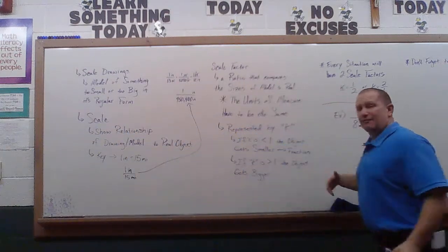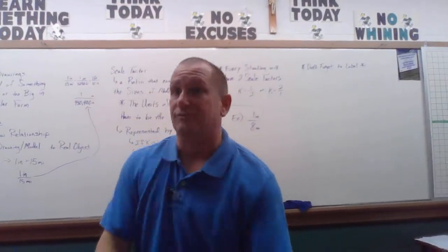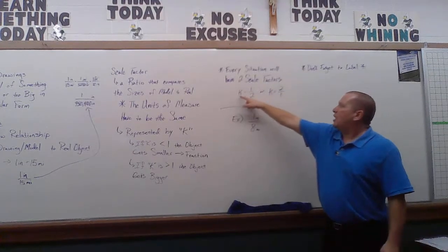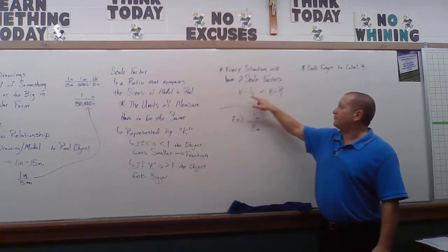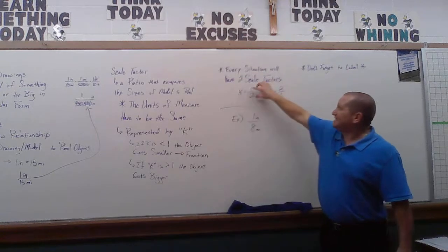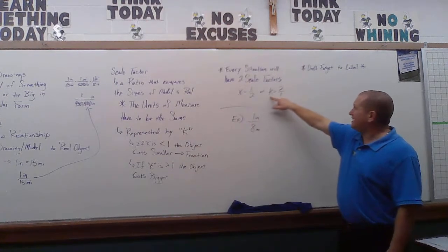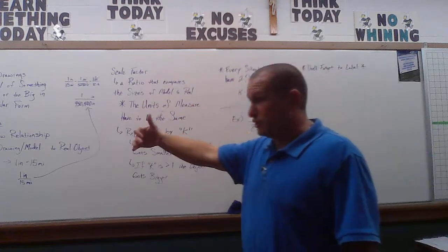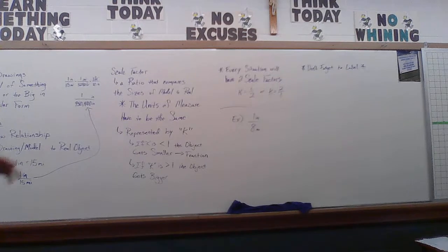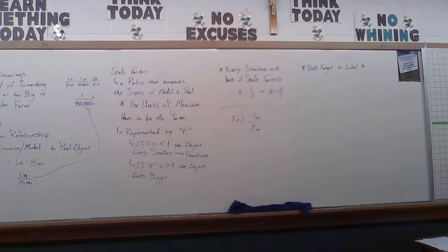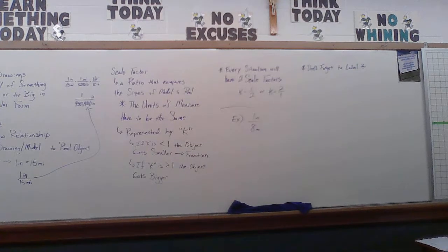Every single situation will always have two different scale factors — it just depends on how you are joining a relationship. If K equals one-half, we're going from the bigger one to the smaller one. Take that same ratio and flip it, it turns into a whole number, meaning it's going from the smaller one to the bigger one. Sometimes they'll tell you which one to use, sometimes you get to make it up on your own.